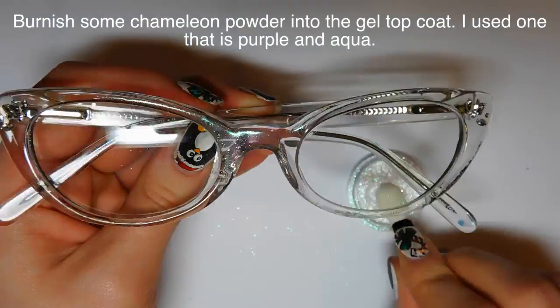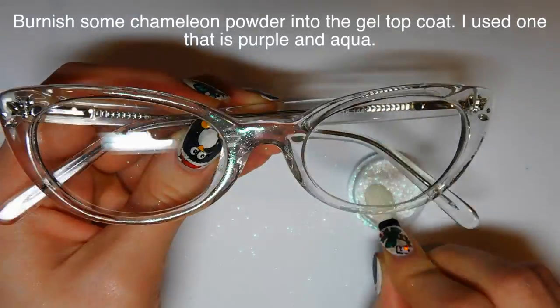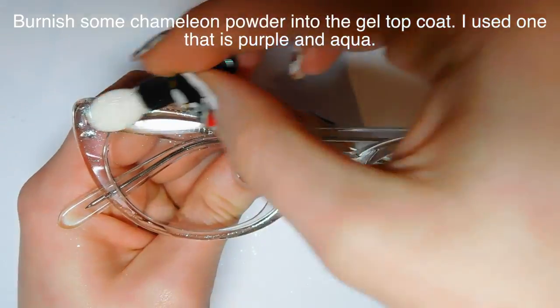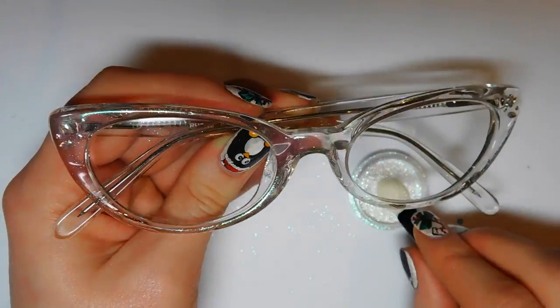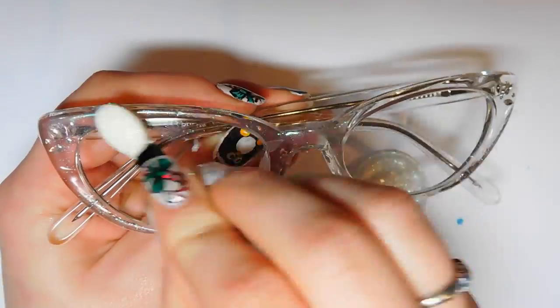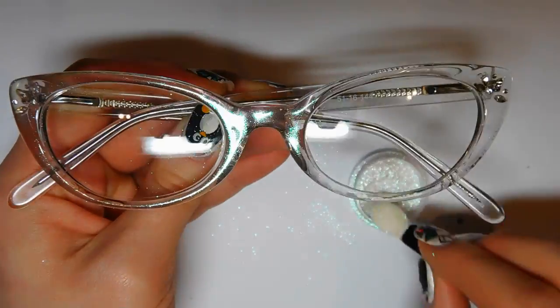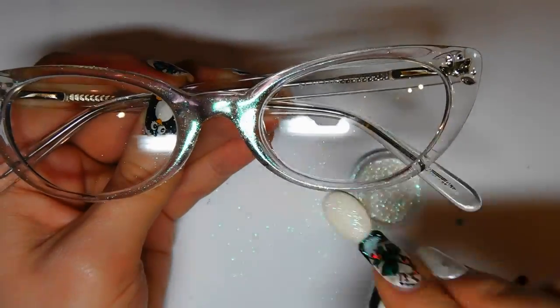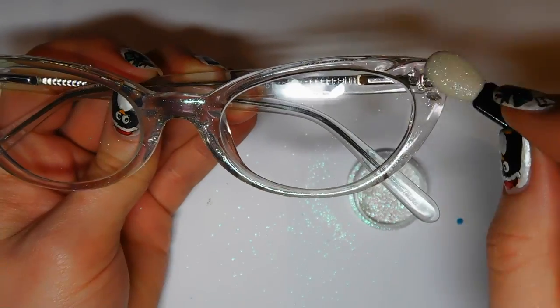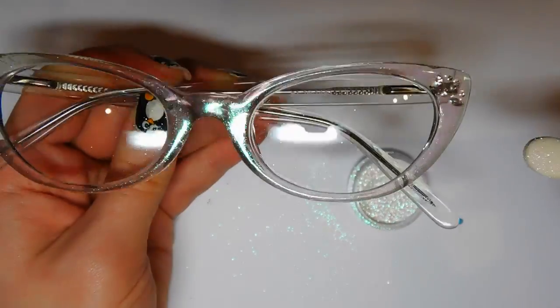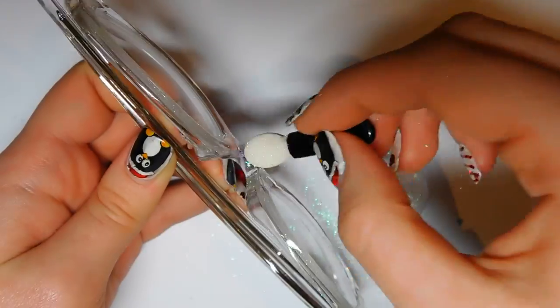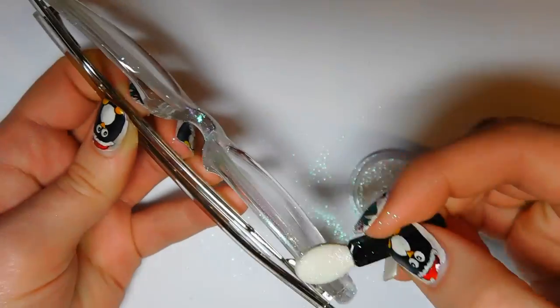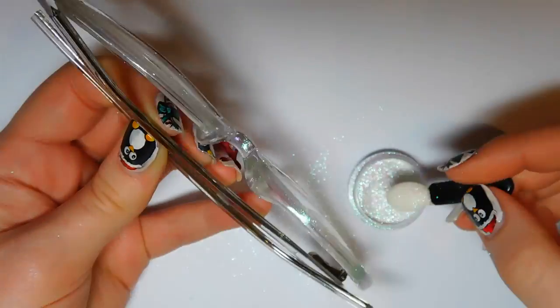So then I'm going to be burnishing in some of that chameleon powder. I looked it up and I figured out what it was that I was actually talking about—chameleon powder that is purple to teal all over the frames. And I know that I'm getting some of this powder on my lenses. That's pretty much inevitable. You can clean it off. And so I did each of these in like a section, so I worked and I finished the front of the frames first and then I started doing the side or the bows.